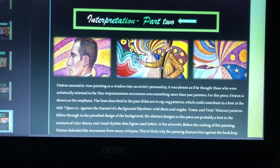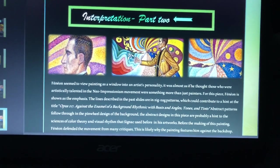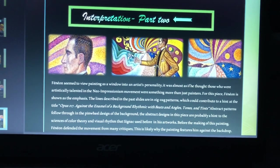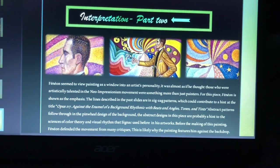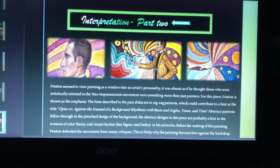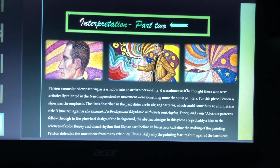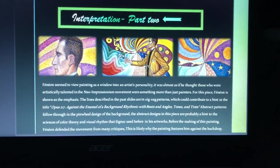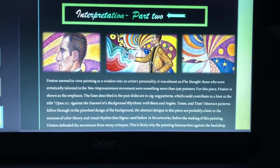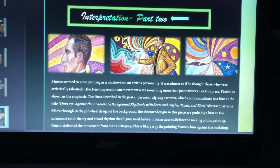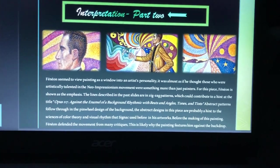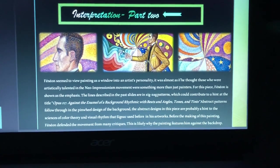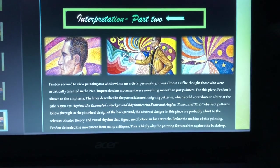Before the making of this painting, Fanon really defended the movement himself from many critics. A lot of people were against this movement, or they didn't like seeing new things at this time period. This is probably why the painting features him as the main focus against the backdrop, and that's what I think Paul Signac was thinking of through this painting.